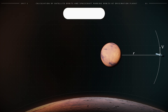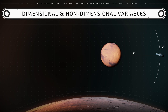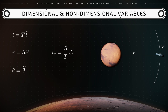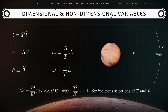The needed non-dimensional quantities are then obtained from the following connections between dimensional and non-dimensional quantities. t_dimensional equals reference time capital T times t̃. r equals capital R times r̃. vr equals capital R over capital T times vr̃. Theta is the same as θ̃. Omega equals 1 over capital T times ω̃. And gm̃ equals T² over R³ times the dimensional gravitational parameter GM. The tilde is used to denote non-dimensional variables.